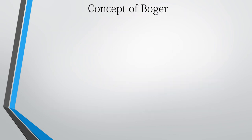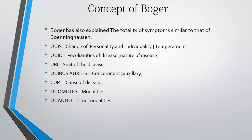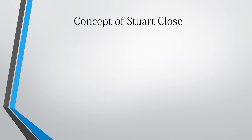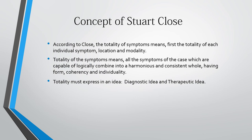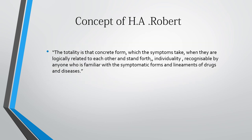According to Boger, the totality of symptoms is explained similarly to Boenninghausen's concept. According to Stuart Close, the totality of symptoms means first the totality of each individual symptom — location and modality — and all symptoms of the case capable of being logically combined into a harmonious, consistent whole having form, coherency, and individuality. The totality must express both a diagnostic idea and a therapeutic idea. Close further states that the totality is that concrete form which the symptoms take when logically related to each other, standing forth as an individuality recognizable by anyone familiar with the symptomatic forms of drugs and diseases.